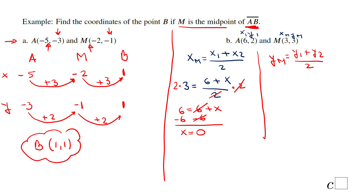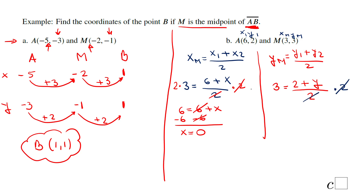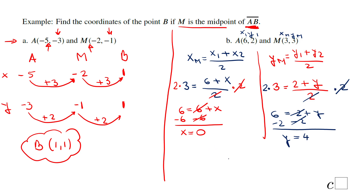For the y-coordinate, the formula is y sub M equals y1 plus y2 over 2. Here y sub M is 3, y1 is 2, and y2 is the unknown y. So 3 equals 2 plus y over 2. Multiply both sides by 2: 6 equals 2 plus y. Subtract 2: y equals 4. So point B is at (0, 4).